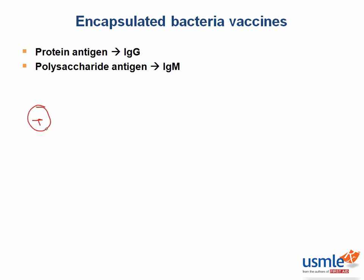Here's our T-cell. We're going to use this triangle to represent a protein antigen. This causes activation of the T-cell, secretion of interleukins, and antibody production.